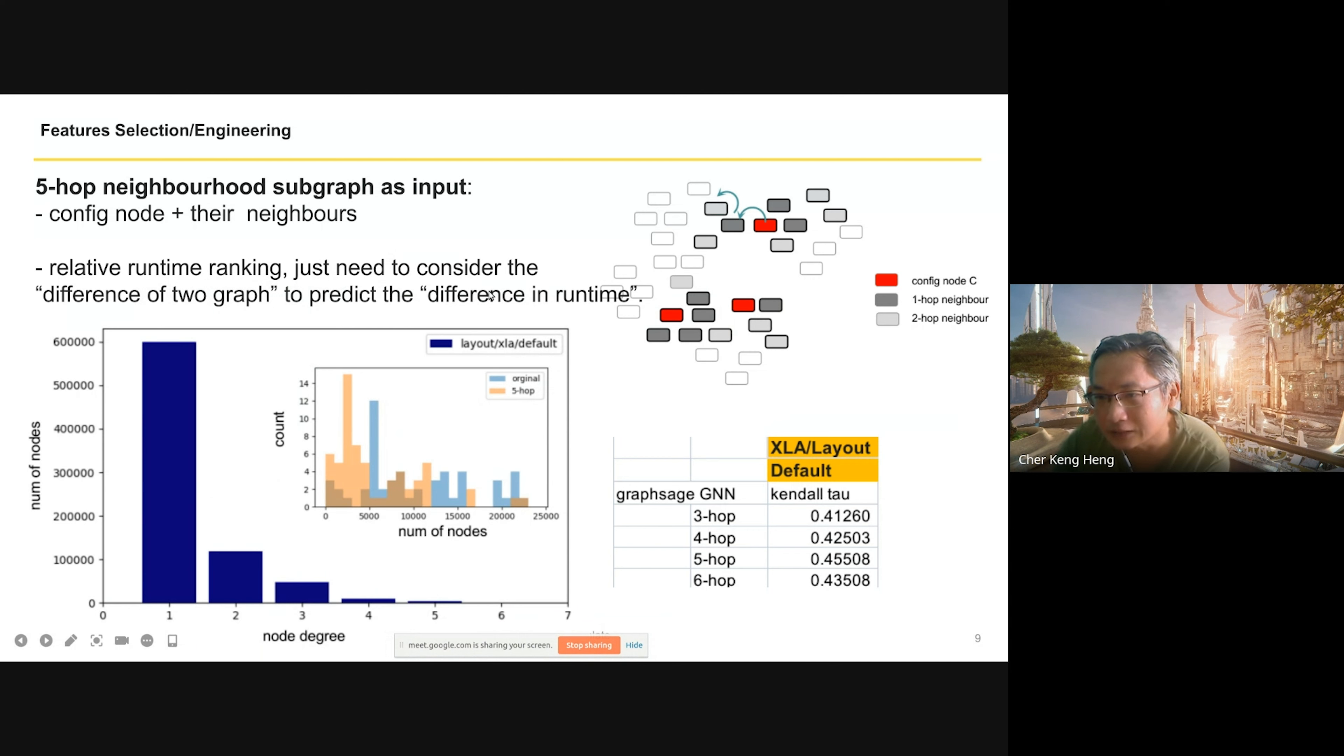That's why I decided to try at first just inputting the configuration nodes. The result was not that good. Then I started to also sample the nodes around the conversion graph. These are the different hop results. Basically, five is enough. I reduced about 25 percent. The details are in the documentation about the average number of nodes in the actual graph versus the reduced graph.